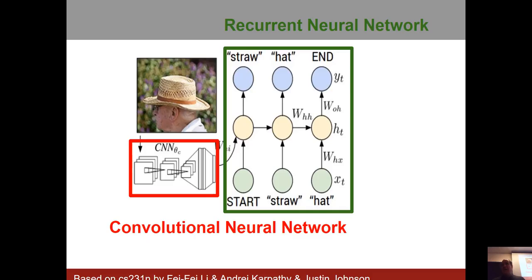The idea is that you have a CNN, and you want to have the output of a CNN by your choice. It doesn't have to be the classes — you could go prior to the classes. You insert that into the recurrent neural network. This example shows a simple RNN, and you train it on text associated with that image. Your sequence is going to have a start token representing the beginning of a sentence, then for this image you produce 'straw', then 'hat', and then the end of the sentence. Therefore you've generated example text associated with a specific image.